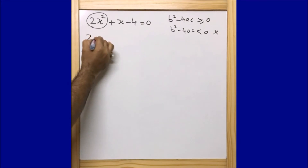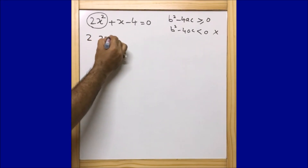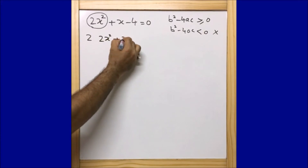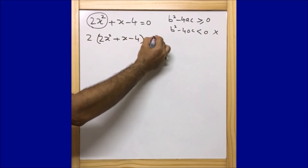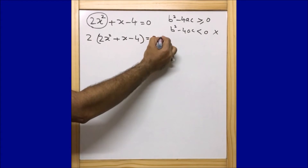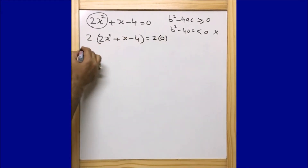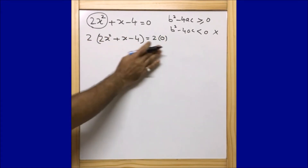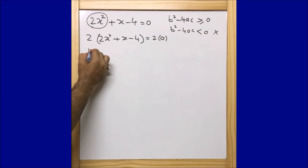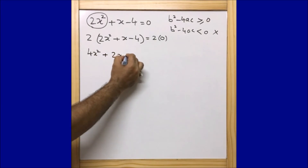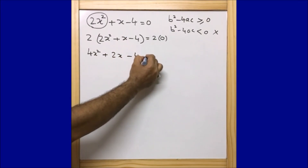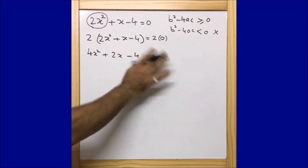So in order to make it 4, I am going to multiply 2 to both sides of this equation. Multiplying 2 to both sides, I get 4x² + 2x - 8 = 0, because 2 × 0 = 0.